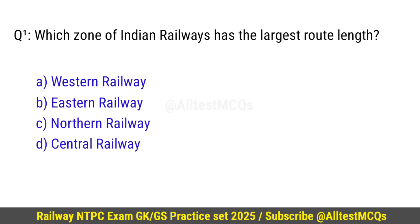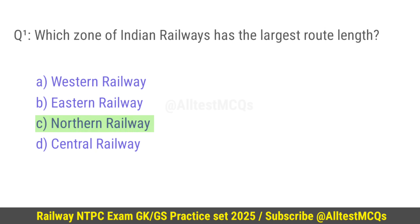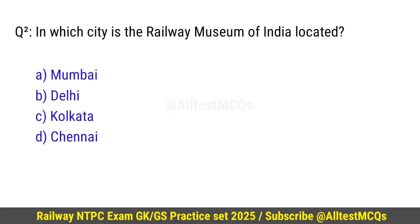Question number 1: Which zone of Indian railways has the largest route length? Correct option is C — Northern Railway. Question number 2: In which city is the Railway Museum of India located? Right option is B — Delhi.